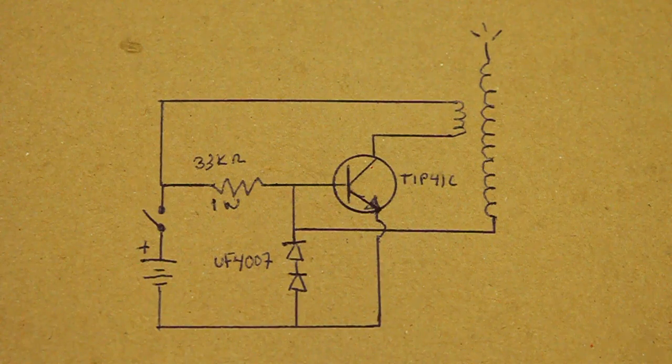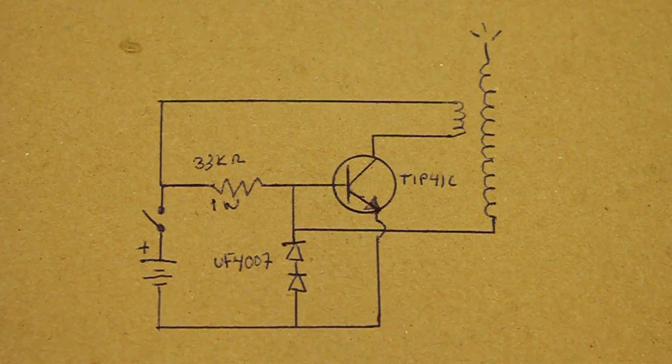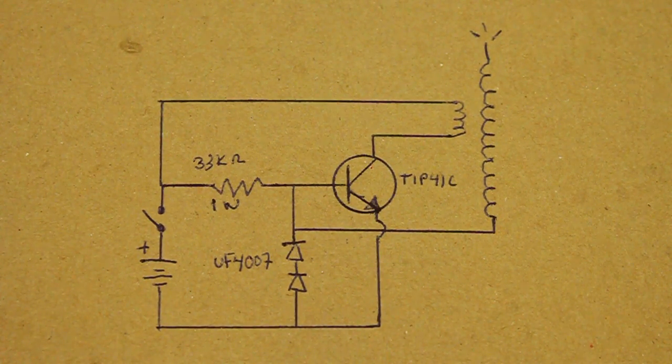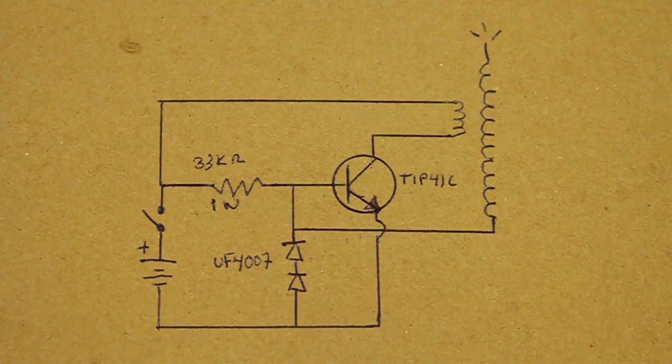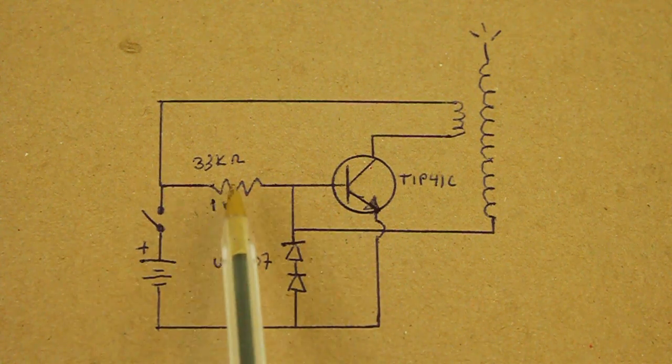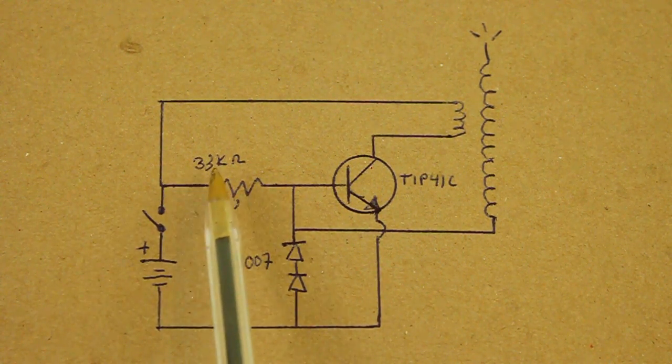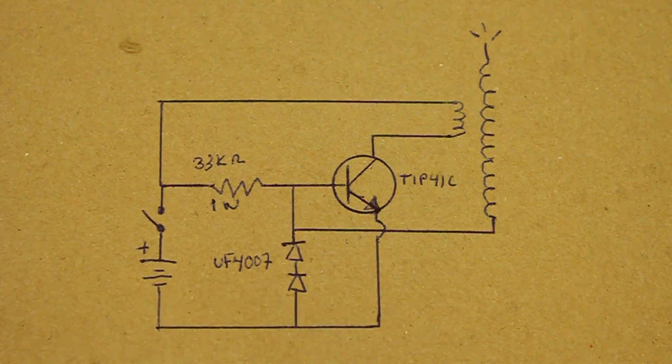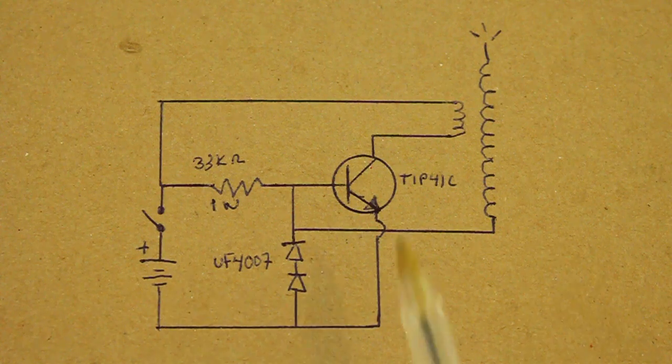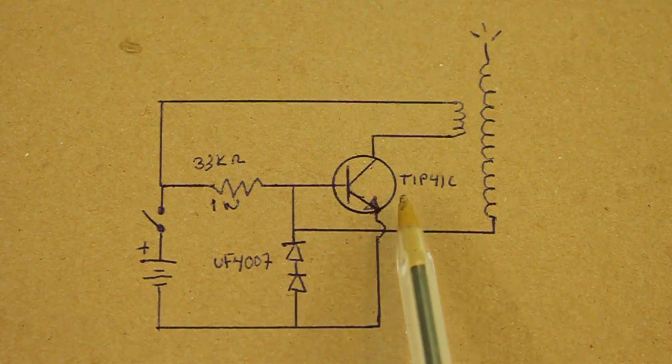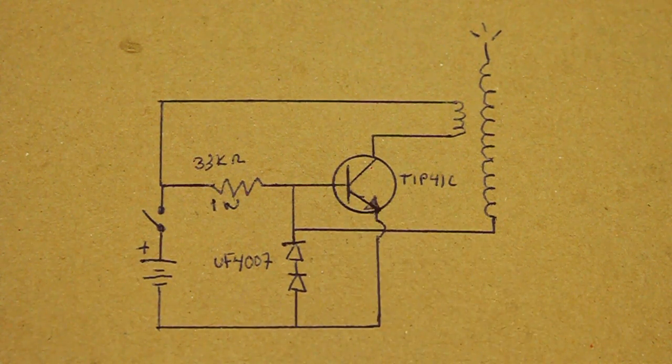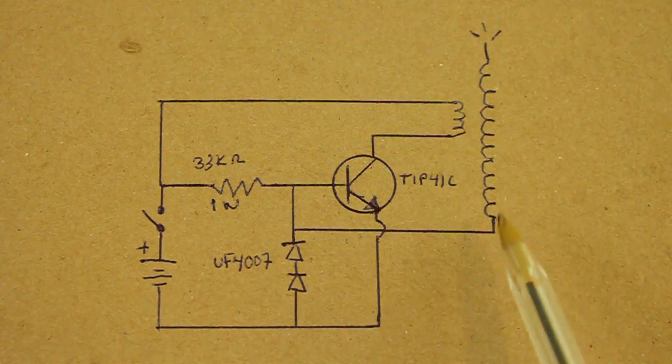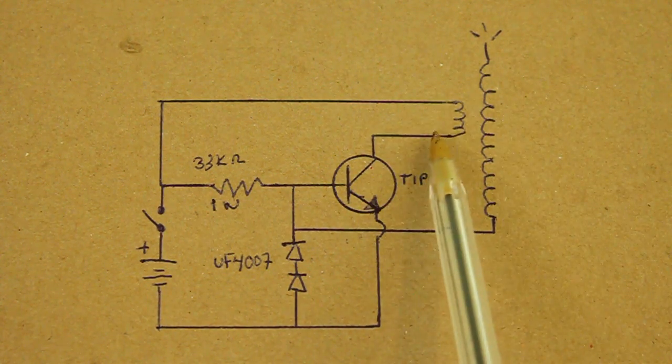Here's the circuit we need to build. It's a standard slayer-exciter circuit. Very simple as you can see. Only one resistor, 33 kilo ohms, one watt. Two diodes, UF4007. And one transistor, tip 41C. This is the secondary and primary coil.